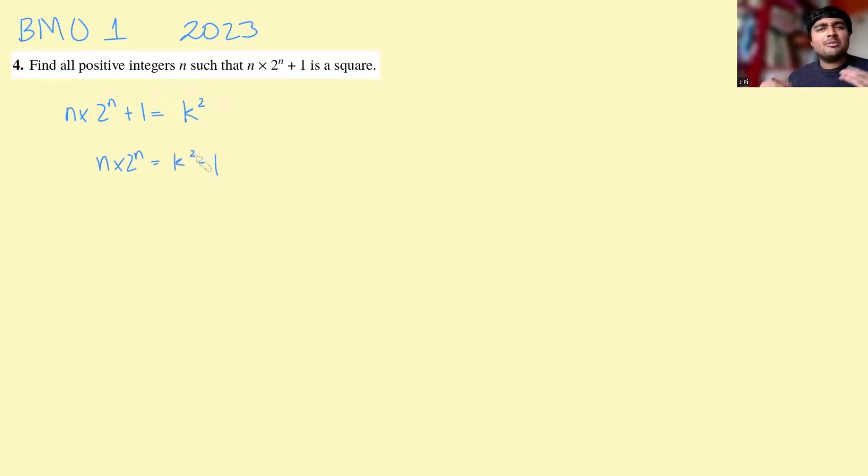And as we know with BMO problems, SMC problems, those sorts of things, they love the difference of two squares. So we're going to write this as k plus 1 times k minus 1. Great, so n times 2 to the n is k plus 1 times k minus 1.